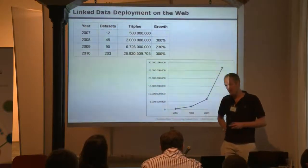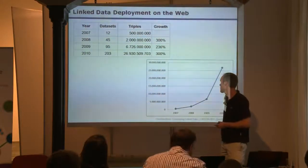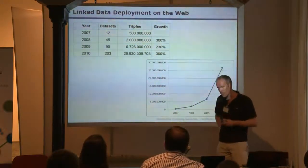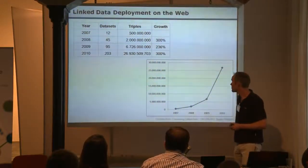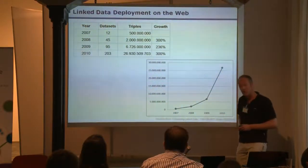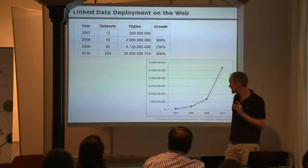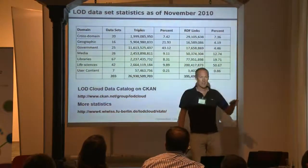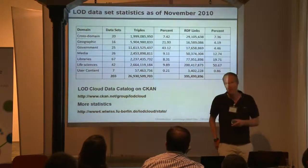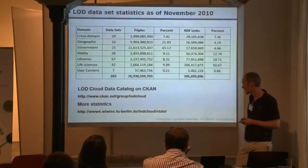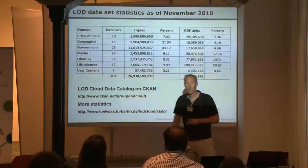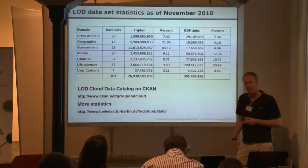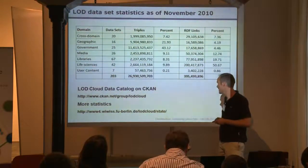Regarding deployment of linked data: the technologies are getting adopted, with around 200–300% growth every year. The number of triples — the smallest information unit in the linked data universe — as of 2010 is estimated at 26 billion triples, so the data space is rather big. This is an estimate based only on datasets registered in CKAN. Many people who publish linked data register their datasets in CKAN, where there is a linked data cloud group, and all registered datasets end up in the linked data diagram shown on the next slide.